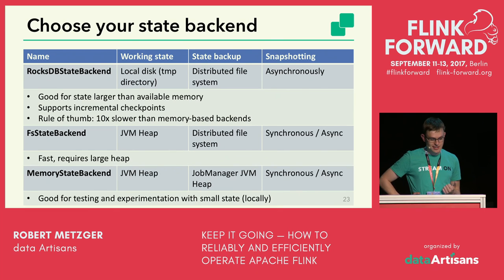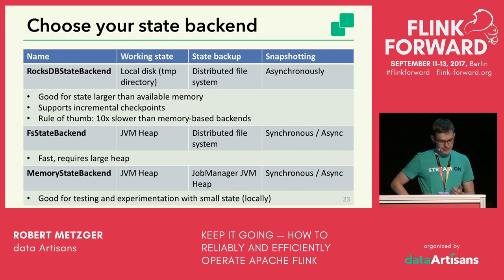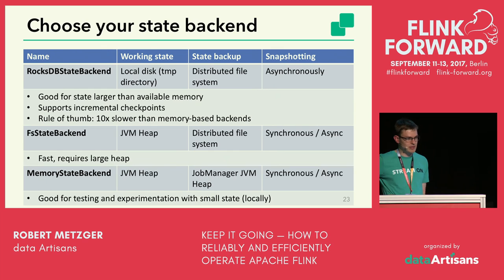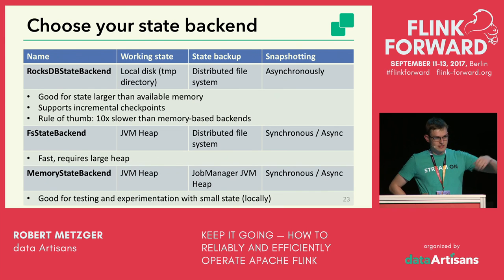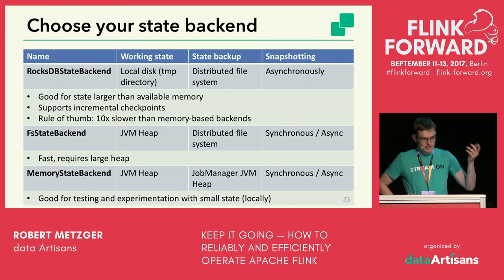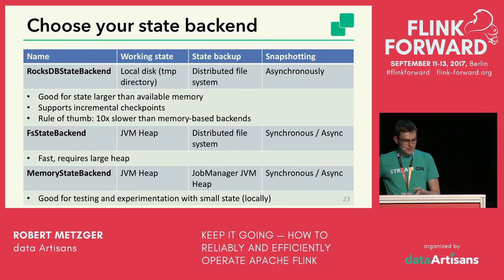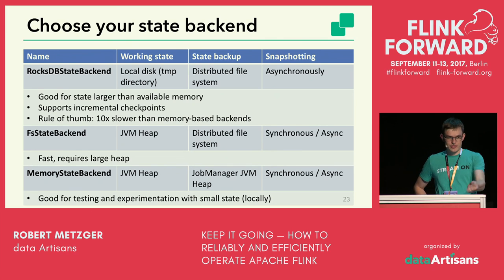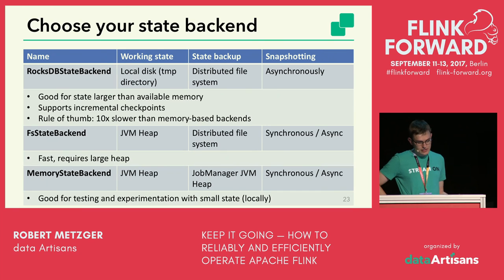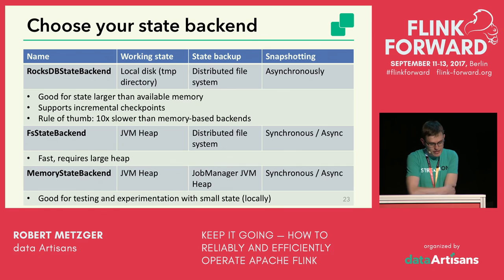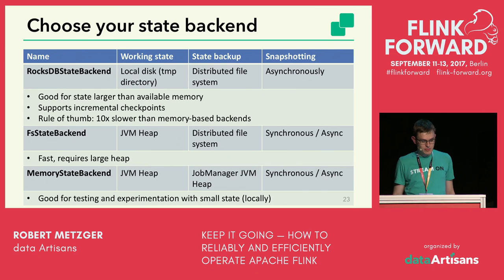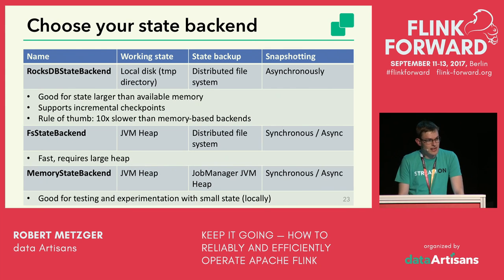If you need something fast and have small state, use the filesystem state backend — which is a misleading name, as it stores state on the JVM heap as objects. There's no serialization during processing; you just access the reference. Serialization only happens during checkpointing or save points. It supports both synchronous and asynchronous checkpointing. The memory state backend is more like a debugging tool — it stores state on the JVM heap and backs up to the job manager's JVM, so it's purely in-memory but still useful for local debugging or high-performance use cases.